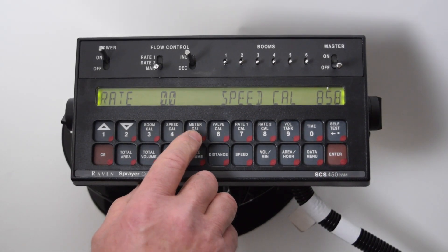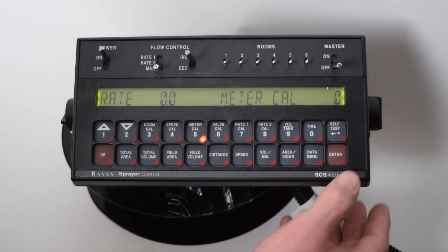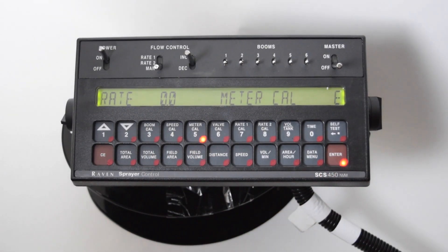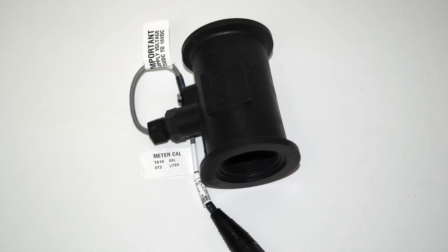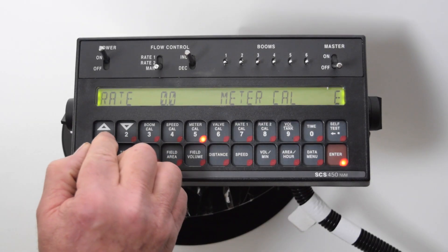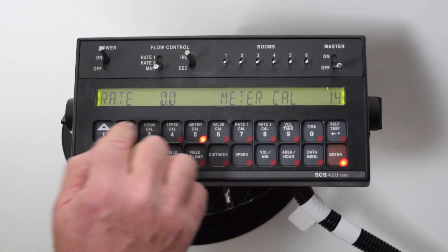Next we go to button number five, which is the meter calibration. All our meters have certain numbers on the tag. This one has 1410.